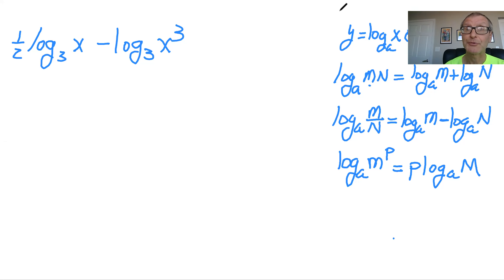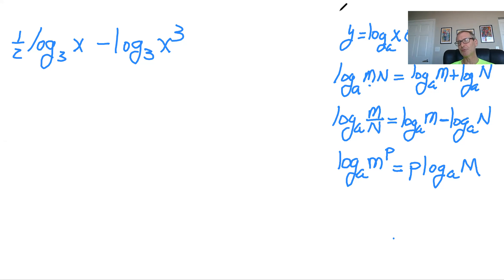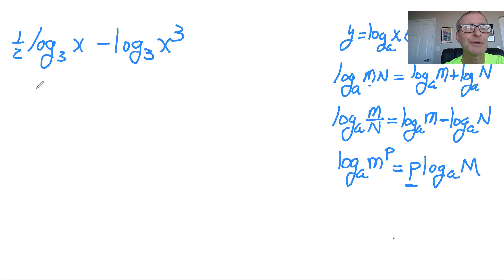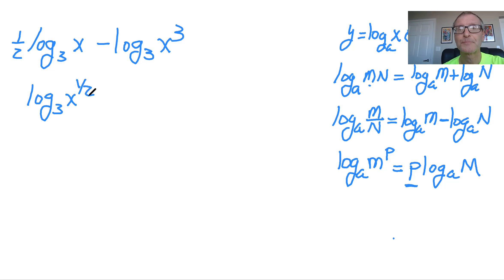Now we're going to do some examples going the other way, where you have an equation with two logs and want to combine everything together. The strategy is: first, bring all the factors multiplied outside the log function inside it. In our first log we have one-half out front — that's the p value — so bring it inside. That gives us log of x to the one-half, minus log of 3x cubed.